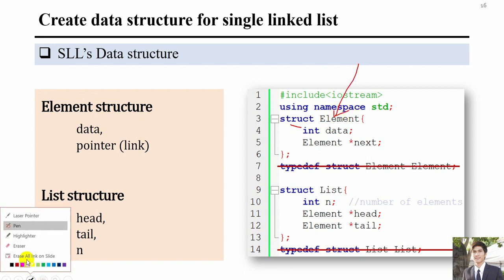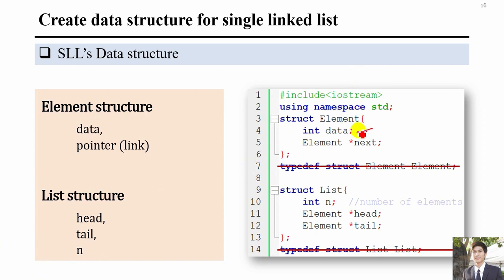If you have more data fields, you can create additional variables. There is also a required pointer field whose data type must be the same as the element type, because it is used to make a connection from one element to another. In C++, the typedef renaming used in C is not required anymore, so we can remove it.